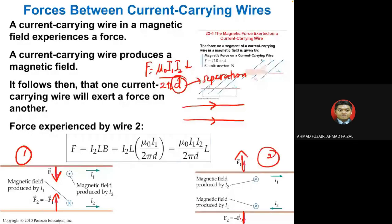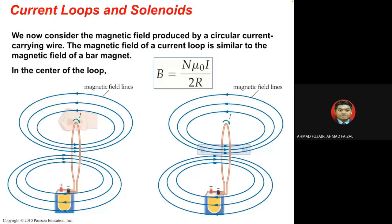For calculations, use F = μ₀I₁I₂L / 2πd. This equation should be available in your appendix, so you don't need to memorize it. This covers current loops and the solenoid.